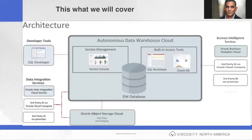First and foremost, as you can see from this picture, this is the architecture. In the center we have the service management console with built-in tools such as SQL worksheet and machine learning. The surrounding boxes are supportability tools that integrate with autonomous data warehouse. The key features illustrated here are Oracle's end-to-end management of data warehouse, including provisioning, fully elastic scalability, scale of compute and storage independently, automated backup recovery, and the 'load and go' concept. You'll hear me use the term 'load and go' throughout the session.